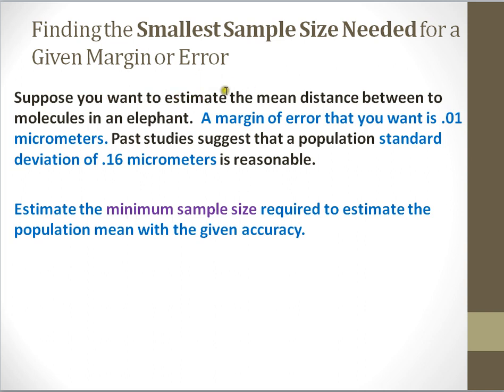Suppose you want to estimate the mean distance between two molecules in an elephant. You may not give this a lot of thought, but as it turns out, elephants contain a lot of molecules. So we want to see what's an estimate of the mean distance between any two molecules in an elephant. Now, I want a margin of error of 0.01 micrometers.